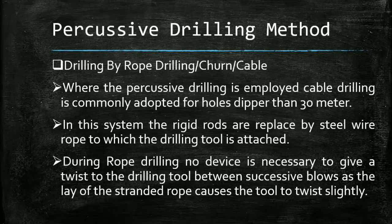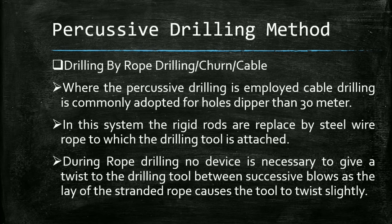The second percussive drilling method is drop drilling, also called churn drilling or cable drilling. Where percussive drilling is employed for holes deeper than 30 meters, cable drilling is commonly adopted. In this system, the rigid rods are replaced by a steel wire rope to which the drilling tool is attached. During rope drilling, no device is necessary to give a twist to the drilling tool between successive blows, as the lay of the standard rope causes the tool to twist slightly.